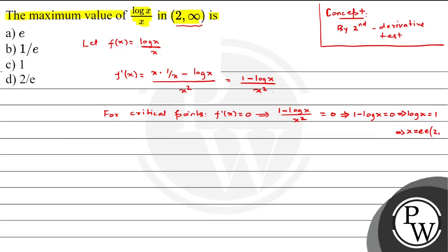So x = e, and since e ≈ 2.718, this belongs to the interval [2, infinity). We got x = e as the critical point, and it belongs to [2, infinity). Next, we find the second derivative to determine whether this critical point is a maximum or minimum.